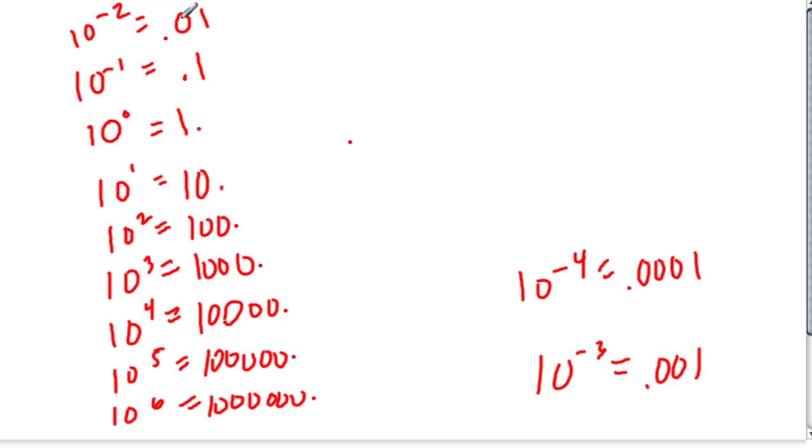When the absolute value of the negative exponent is 4, there are 3 zeros. So, there's always 1 less 0 than the exponent when you're dealing with decimals and powers of 10.